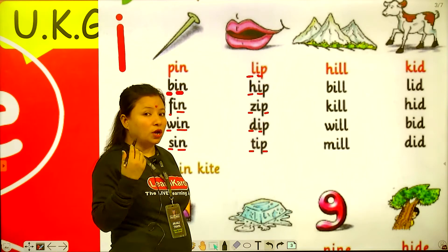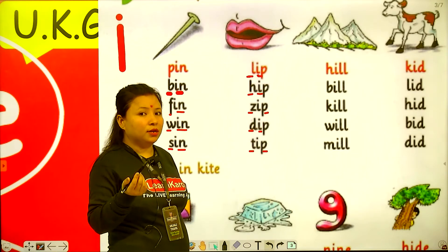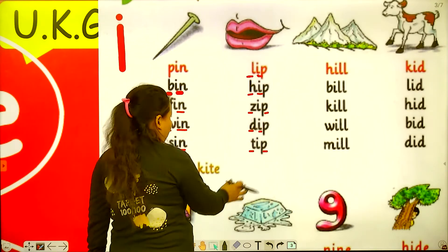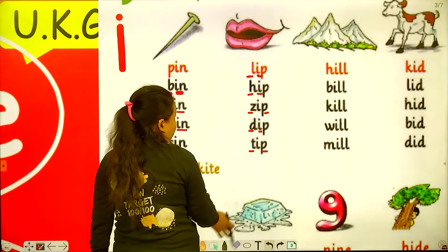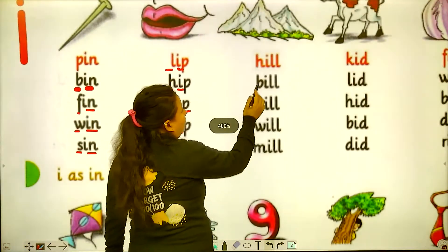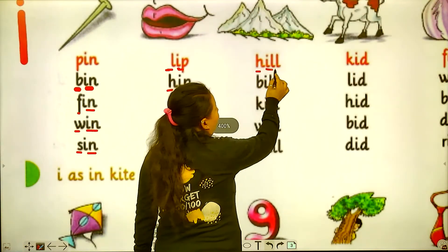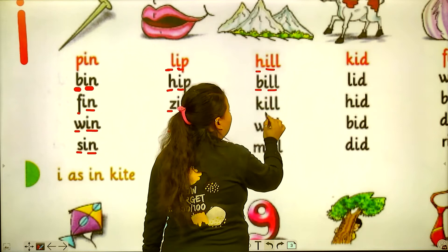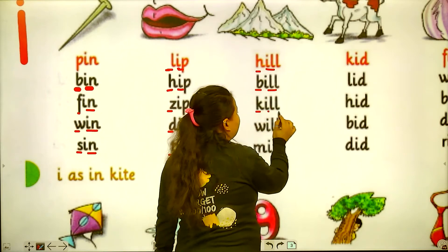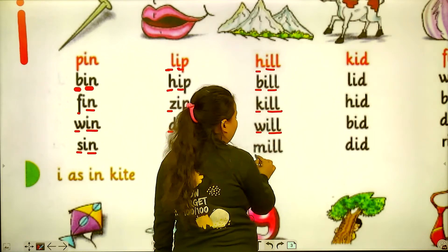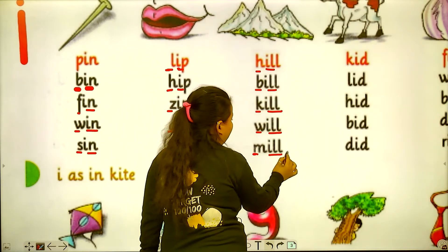Which sound is coming? It's an E sound. Now next: hill, bill, kill, will, and mill. Don't break the word when you read it.